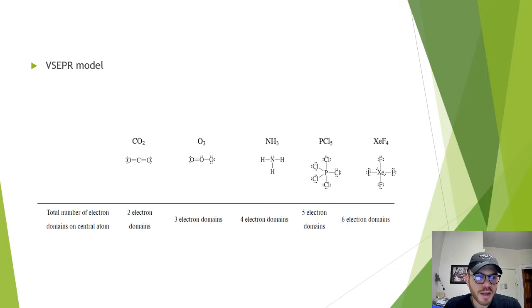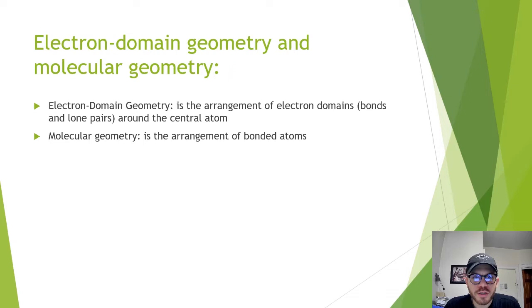It is important to understand that you cannot tell the shape of a molecule or ion simply from its formula. You must apply VSEPR theory. In this experiment, we are going to use balloons in order to visualize the arrangement of electron domains. Electron domain geometry is the arrangement of electron domains, bonds, and lone pairs around the central atom, whereas molecular geometry is the arrangement of bonded atoms.